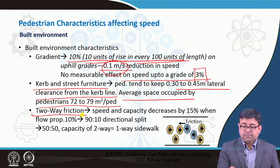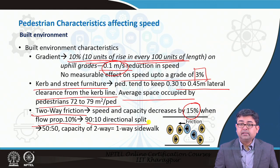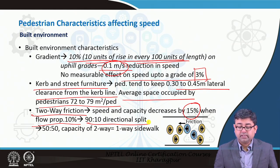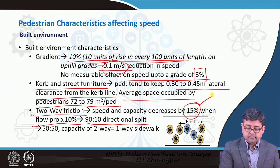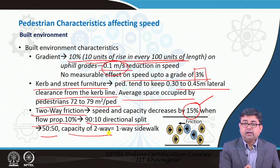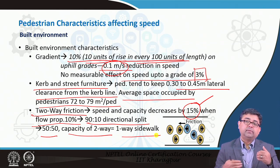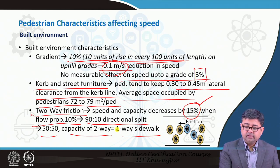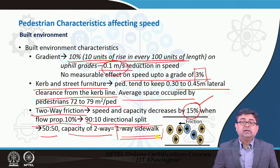In the case of two-way friction, speed and capacity decrease by 15 percent when the flow proportion is 10 percent — meaning a 90-to-10 directional split already causes a 15 percent reduction in maximum walking speed. At a 50-50 directional split, the capacity of a two-way facility is equal to that of a one-way sidewalk facility, so two-way pedestrian traffic reduces both speed and capacity significantly.